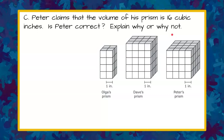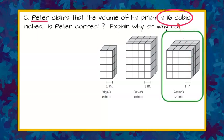Welcome back. On part C, we're focusing on Peter, and here is Peter's prism. We're told that he's thinking his prism is 16 cubic inches. We want to know if that's true or not. So let's identify length, width, and height.